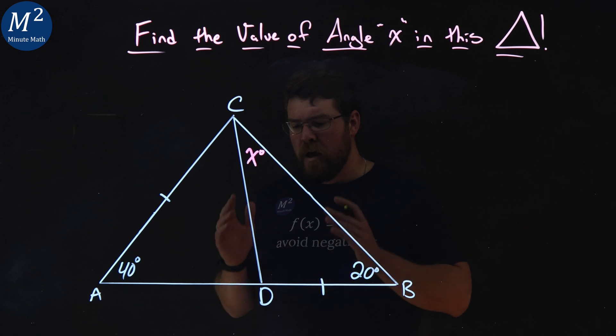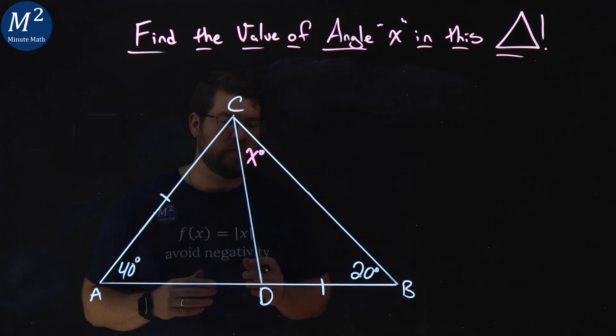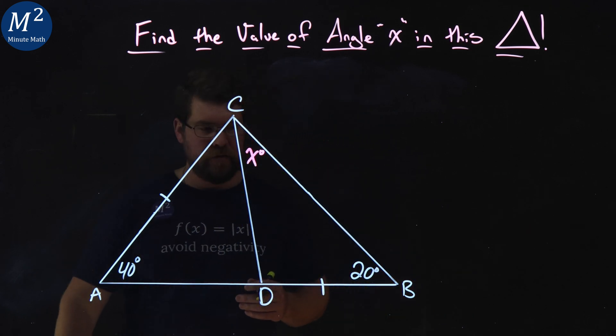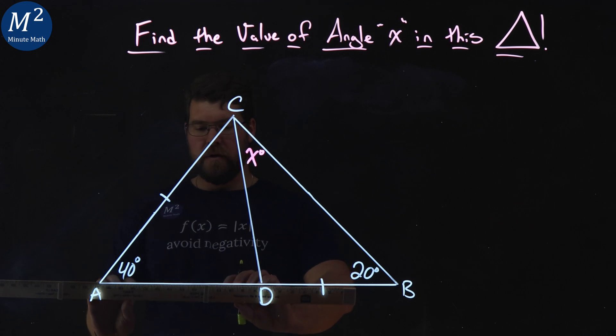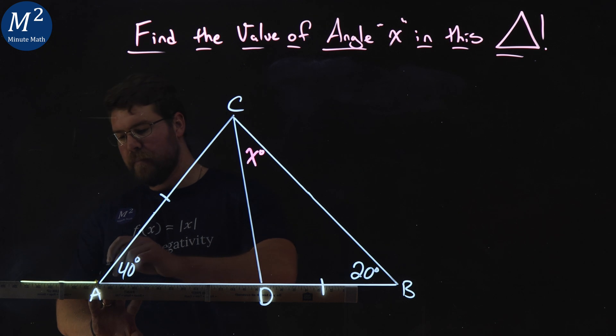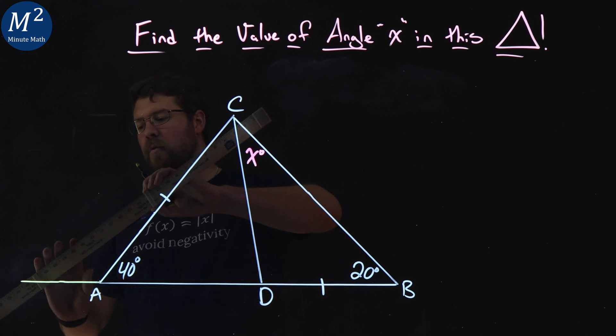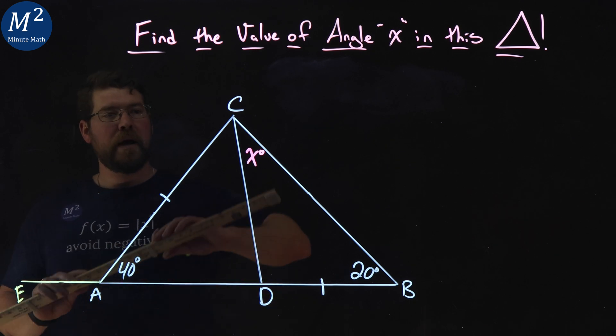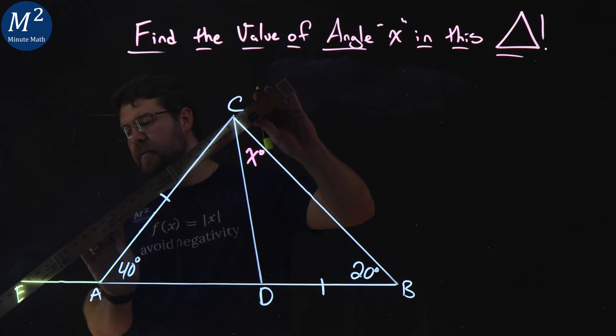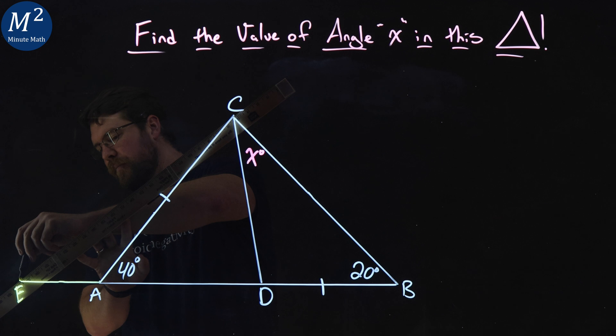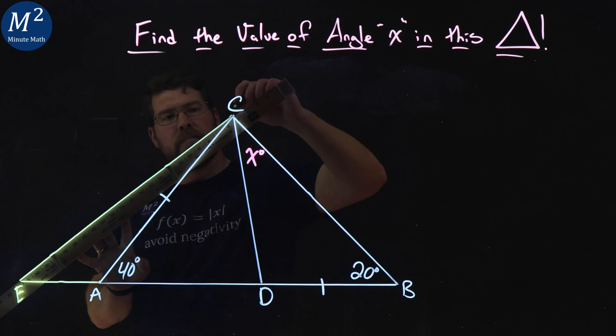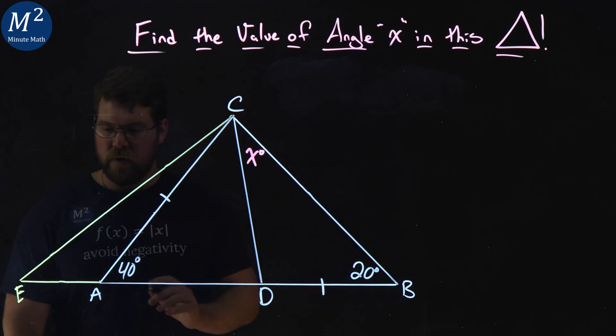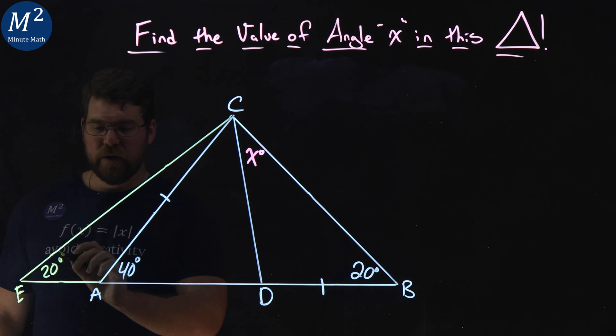One of the big things in geometry is we can draw extra lines, so I'm going to draw an extra little line here, extending BA, such that this new point, let's call it E, when connected to point C creates a 20 degree angle. So we have a 20 degree angle here.